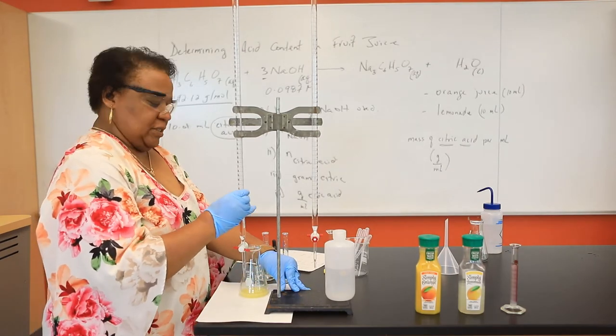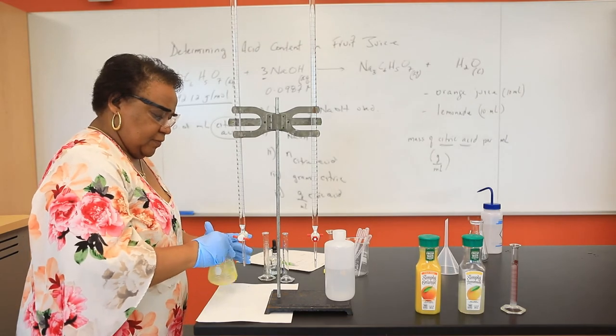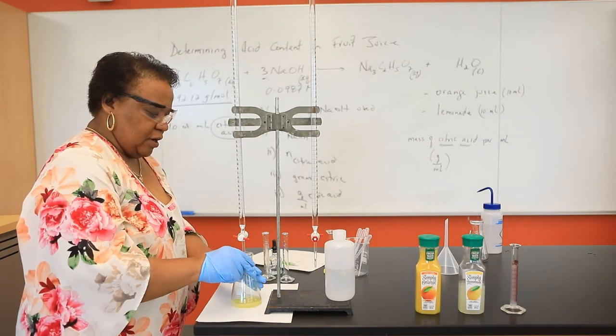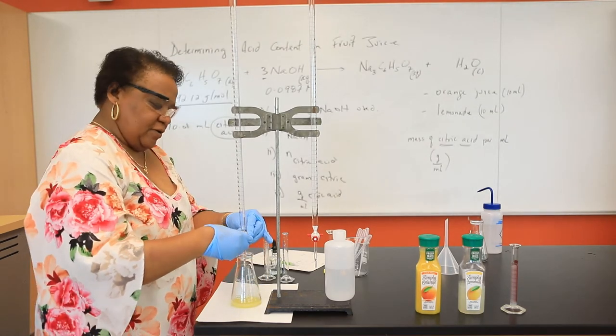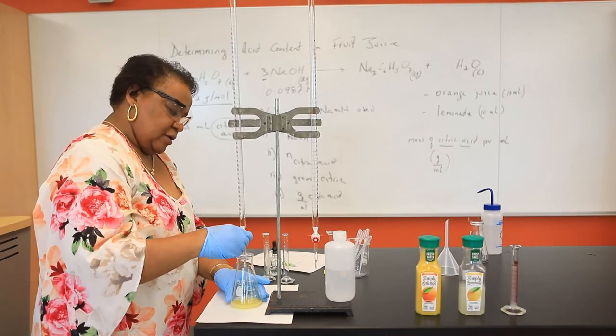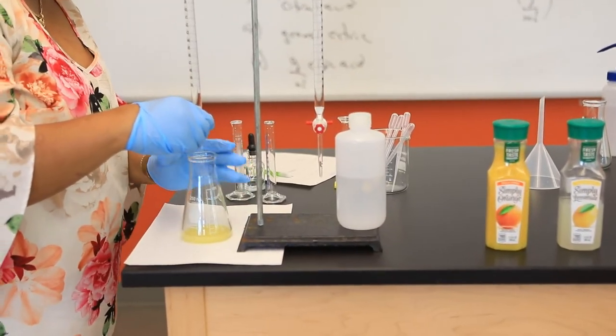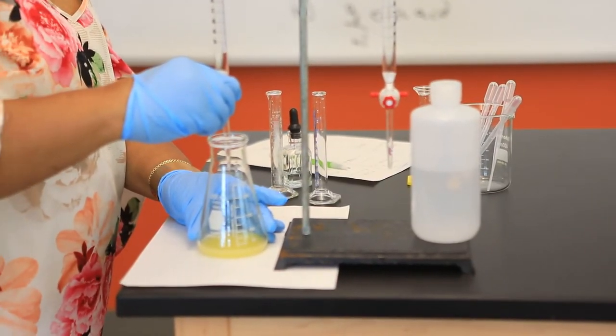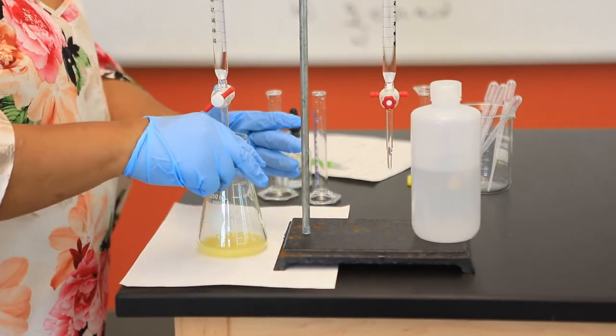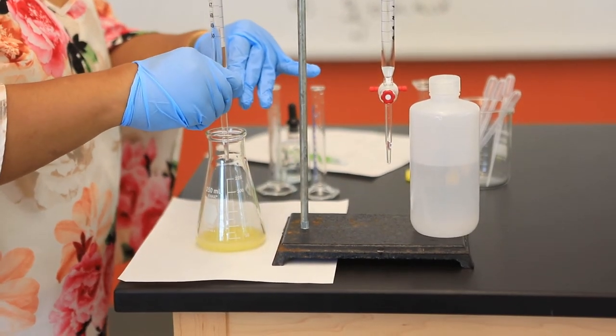The burette is filled with our sodium hydroxide solution. So slowly, I'm going to be adding the base, sodium hydroxide. This burette is void of any air bubble at the tip. I'm going to be adding sodium hydroxide slowly to my acidic solution, my fruit juice.